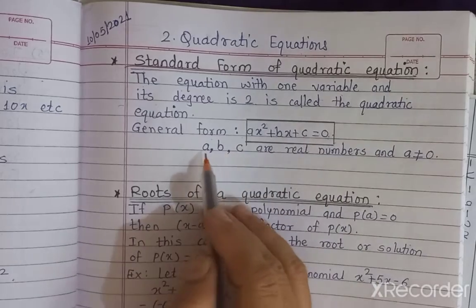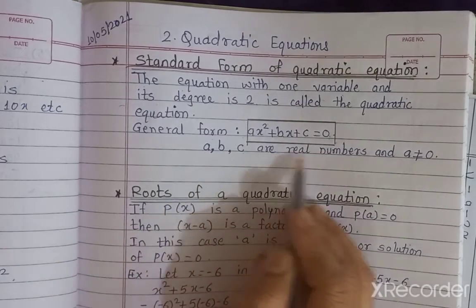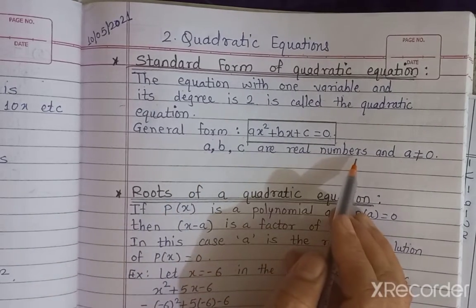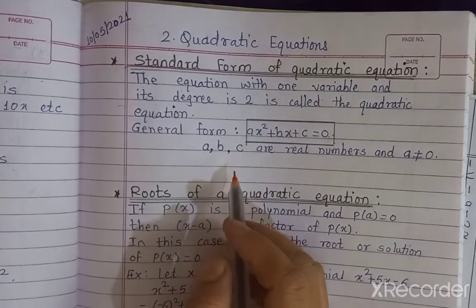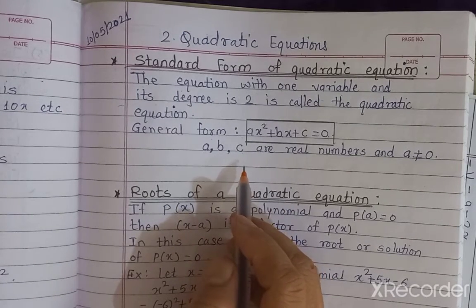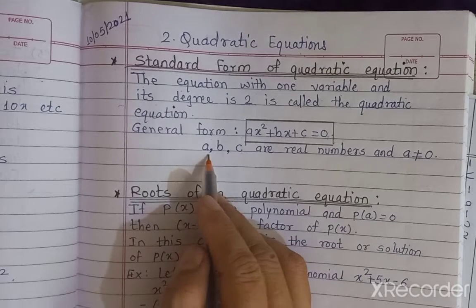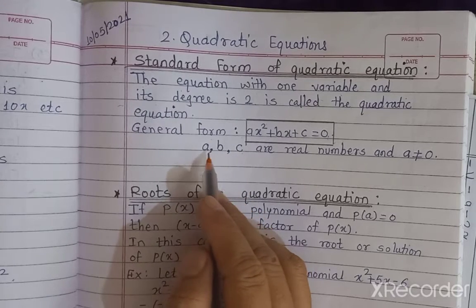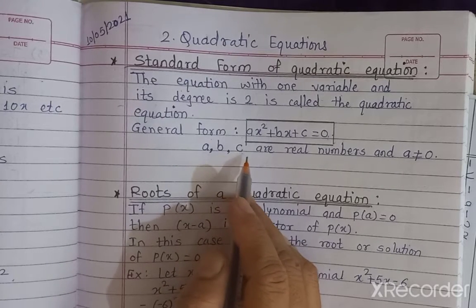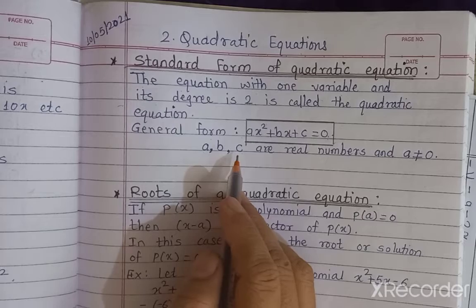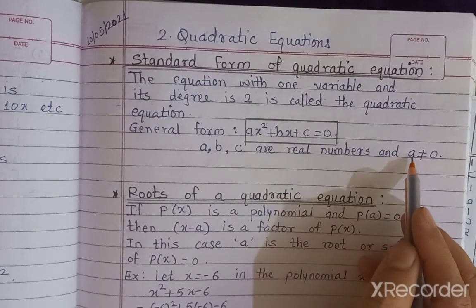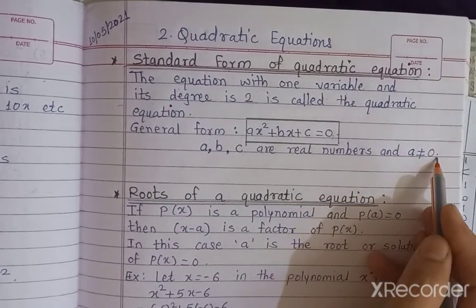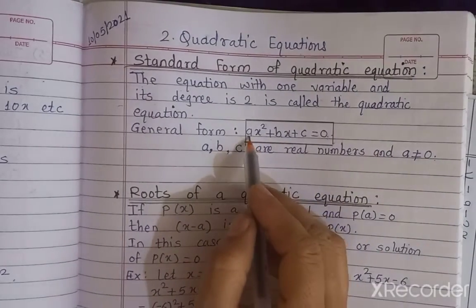In this equation, a, b, and c are real numbers. It means the values of a, b, c can be positive, negative, or 0. But always keep in mind the value of a should not be equal to 0. The value of a is never 0.